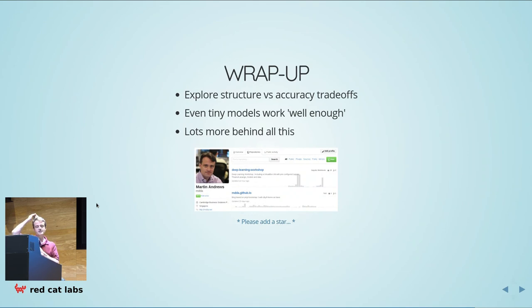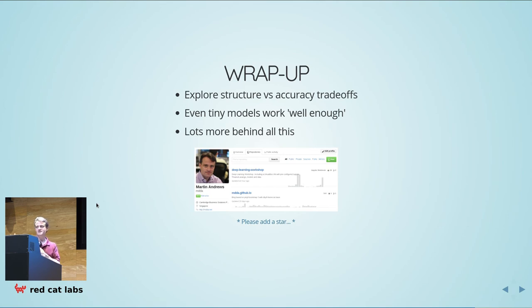Wrapping up: you've got to understand what kind of structure underlies the model, because if you want to cut up the network you'll need to know where it can be cut. For simple transfer learning you can cut it at the end, but for something more clever like style transfer — where you need to look at intermediate layers — you need to understand where the good cut points are. Your small model may not have these cut points because it's been sliced and diced. But for many mobile app use cases, tiny models are pretty good and work well enough.